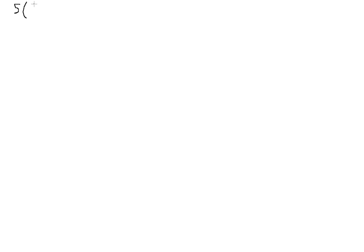Let's say we have 5 times (x plus 2) equals 11. Here we have multiple steps because our variable is buried inside the parentheses. Let's start off by distributing — using the distributive property — this 5 into our expression, because what we ultimately want to do is extract this variable outside of the parentheses and then isolate x on one side and everything else on the other side.